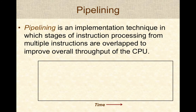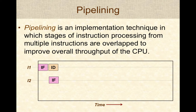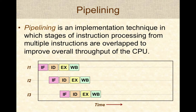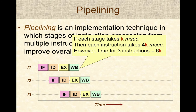From a graphical perspective: when instruction I1 is being fetched, then I1 starts decoding while I2 is being fetched by a different hardware unit. When I1 is executing, I2 is decoded while I3 is being fetched. This operation happens continuously — each stage processes a different instruction, keeping all parts of the CPU busy. If each stage still takes k milliseconds, each instruction still takes 4k to process, but the overall time for three instructions reduces to just 6k milliseconds.